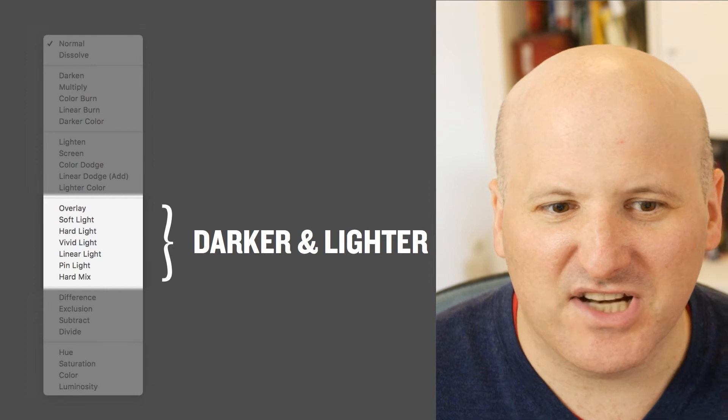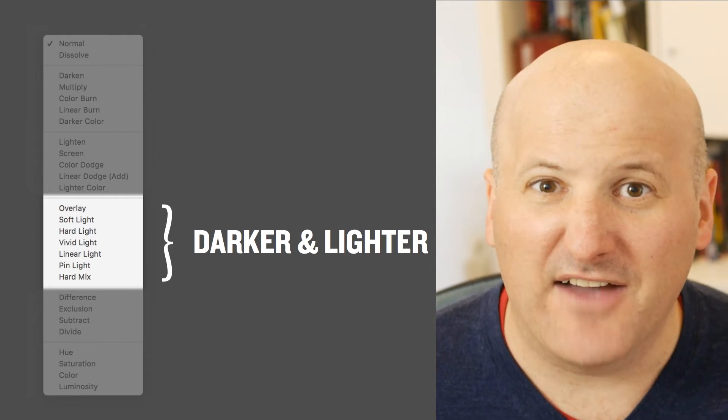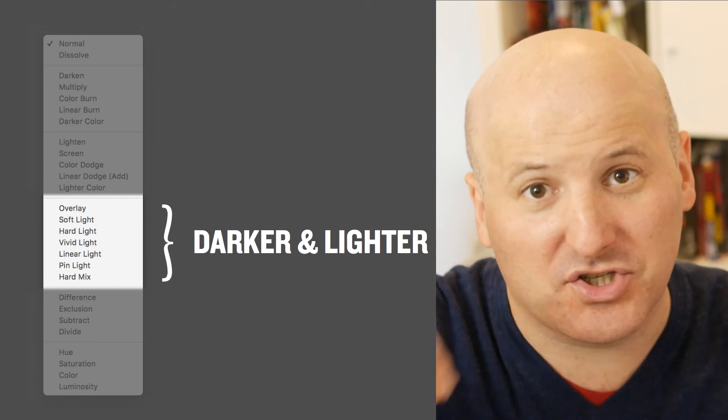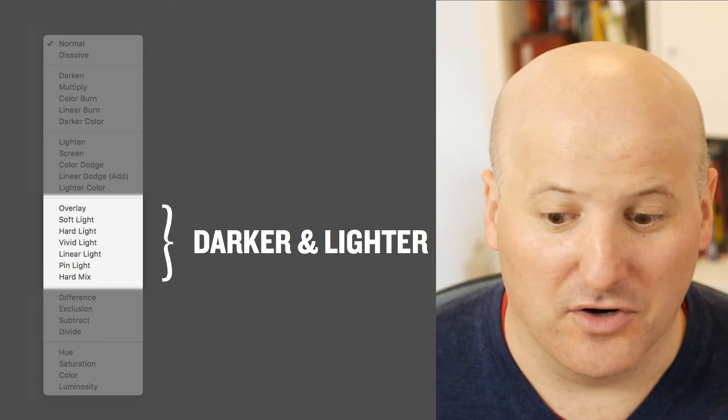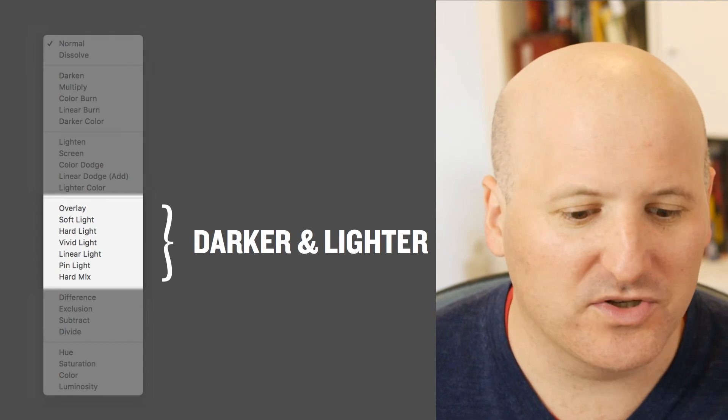Other than overlay, I haven't really used the other darker-and-lighter blend modes very much, but here's one use case I'll show. You can duplicate a layer, drop the saturation down to neutralize it, and set it to soft light — which creates what's called a bleach bypass look, based on a film processing technique. If you use hard light instead, it gets even harder, very contrasty but not very saturated. And if you turn up the saturation, the colors really start to pop.